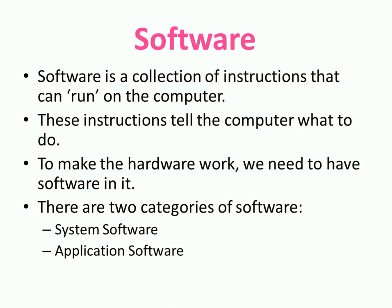Software is a collection of instructions that can run on the computer. These instructions tell the computer what to do. To make the hardware work, we need to have software in it. There are two categories of software: System Software and Application Software.